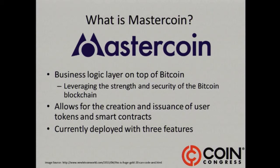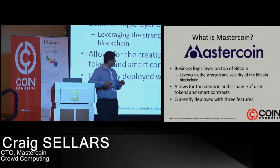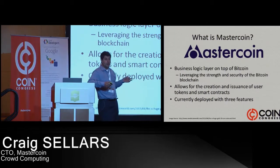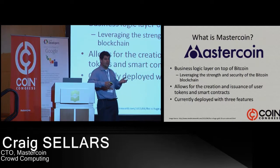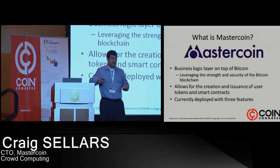MasterCoin is now the fulfillment of that white paper. It is the business logic layer on top of Bitcoin. We leverage the strength and security of the Bitcoin network. The Bitcoin network has the most secure and the most robust security of all the blockchain technologies out there. The global hash power on the Bitcoin network is, in fact, greater than all of the supercomputers on Earth combined.